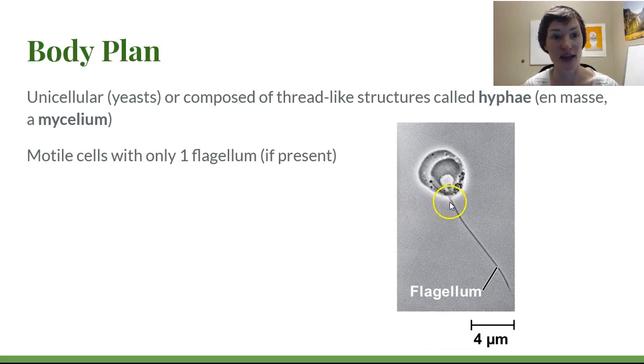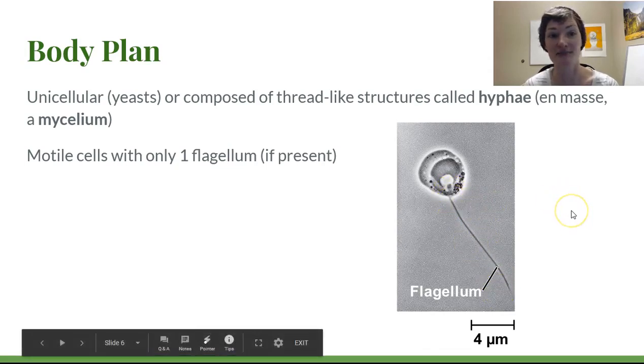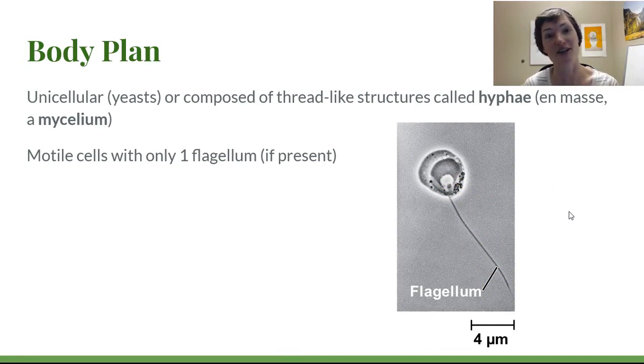They're in this larger group with us called the opisthokonts, which means one flagellum. So only some earlier groups of fungi have flagella at all, but when they do have it, it's the single whiplash flagellum just like us. It's one of the things that puts fungi closer to us in our evolutionary history.